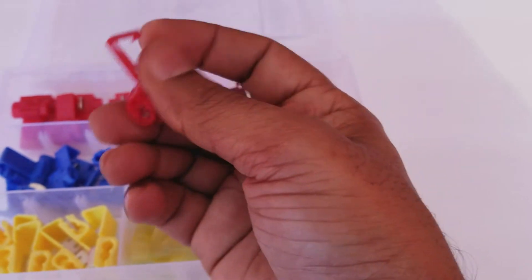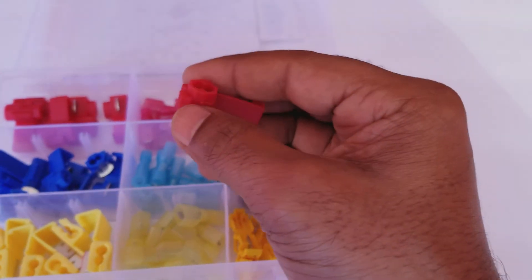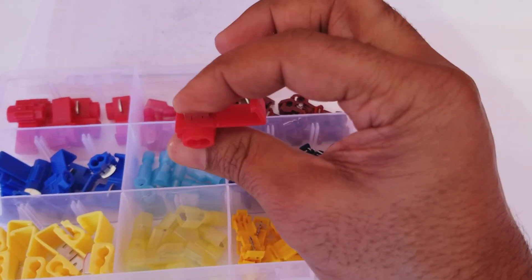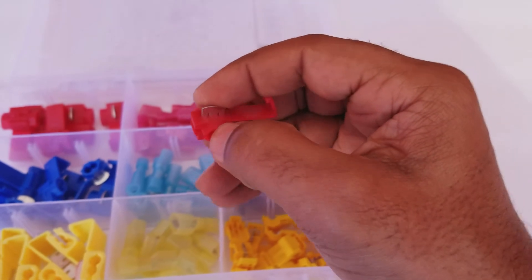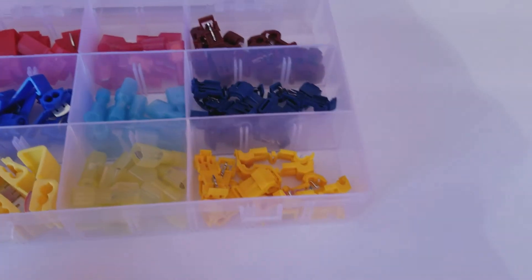This is the quick splice connectors. You don't have to cut the wires. You just put the wires through here and then you press on this using pliers to splice through the wires and get power to connect power, whatever you want to do.